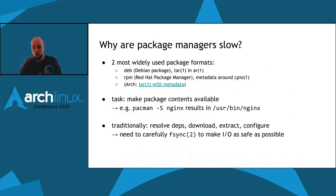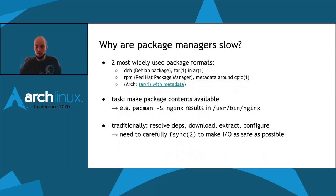So why are these package managers so slow? If we look at the two most widely used package formats, they're both archive formats. In Debian, .deb files are tarballs wrapped in a Unix archive. In RPM — the Red Hat package manager used by Fedora and derivatives — we have a CPIO archive with a little metadata around it. In Arch, the situation is the same: a tarball with a little metadata compressed using ZStandard.